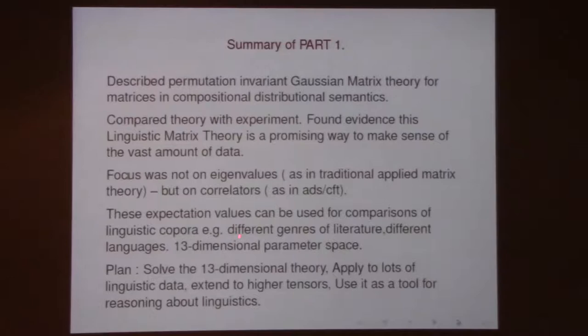Have you looked at the eigenvalue distributions? Well, these are general real matrices — they're not always diagonalizable; they could be Jordan blocks and so on. We haven't looked at it but one could. The proposal was that here's a nice 13-dimensional space of quadratic invariants. One should look at that as a signature to compare the characteristics of different corpora — different collections of text.